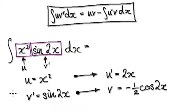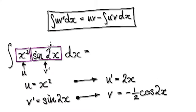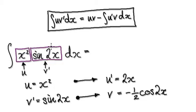We don't really need substitution, so it's just straightforward integration by parts. So let's u equal this, and let v' equal this.